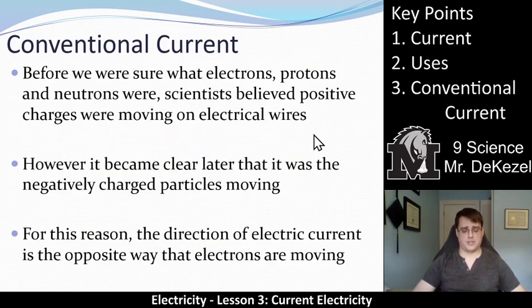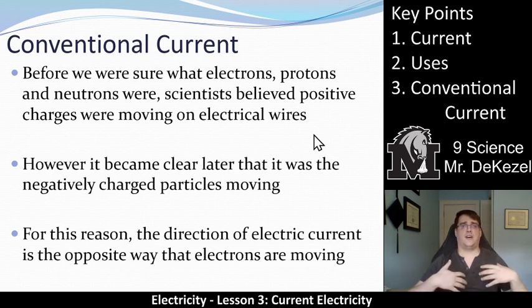Conventional current. It's important to think about electrons moving down a wire as why electricity works. But before we really knew that electricity was electrons, that it was these subatomic particles, we didn't know that it was electrons, protons, and neutrons. Scientists believe that positive charges were the ones moving on electrical wires. It became clear later that it was the negatively charged particles moving. But essentially, it was too late to change the convention. It had been used throughout the world that current moved opposite to what became clear later on.